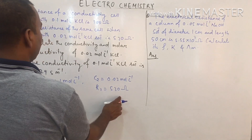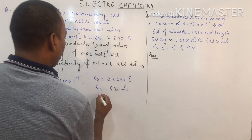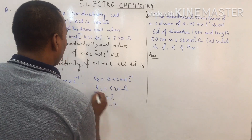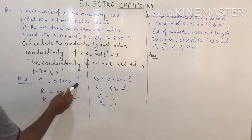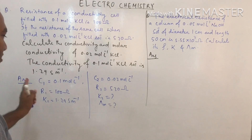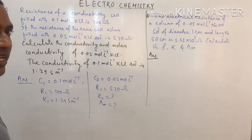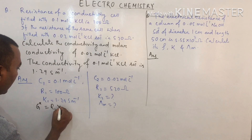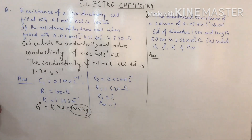The question asks us to calculate κ₂ and molar conductivity λm. The key idea is: when concentration changes, resistance changes and κ changes, but the cell constant G* remains the same. So G* = R₁ × κ₁ = 100 × 1.29.